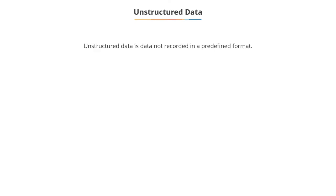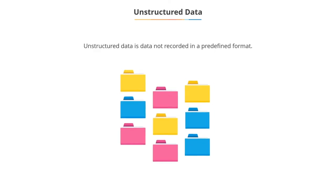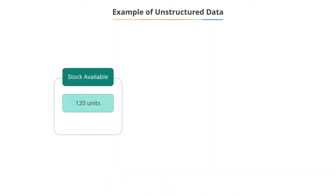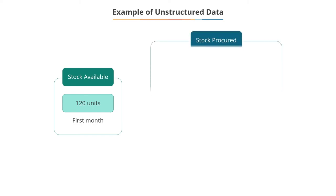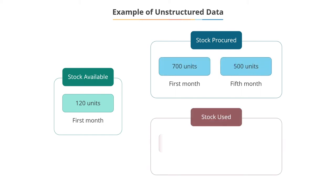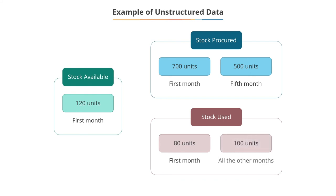When data is not recorded in a predefined format, it is referred to as unstructured data. Some data in the given table can be stated in an unstructured format as: 120 units are available in the first month as opening stock. Material is procured in the first and fifth months; quantities procured are 700 and 500 respectively. While 80 units were used in the first month, 100 units were used in other months.